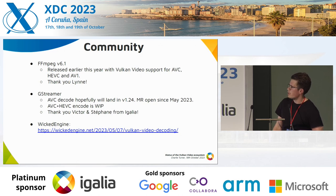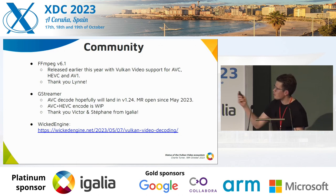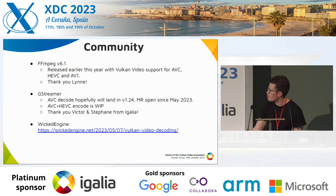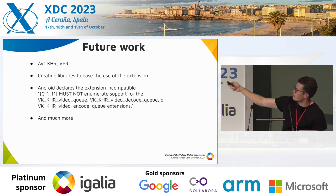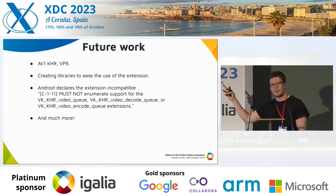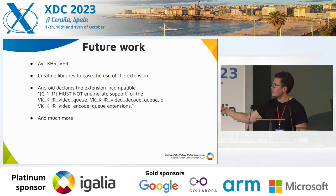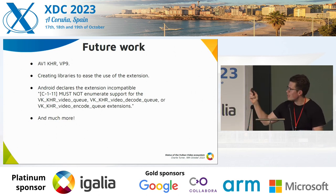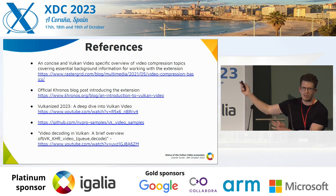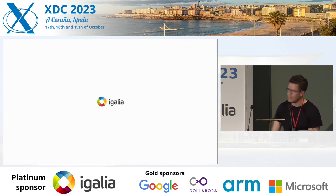On community adoption: it's in FFmpeg 6.1, it's coming in GStreamer — check out the Wicked Engine blog post. We're going to be working on AV1 and VP9. It's really difficult to use this extension, so we're hoping to create libraries to ease that. There are some problems on Android, so if anyone knows about that, please come and talk to me. There's much more going on and a bunch of references if you want to get involved. Thank you.